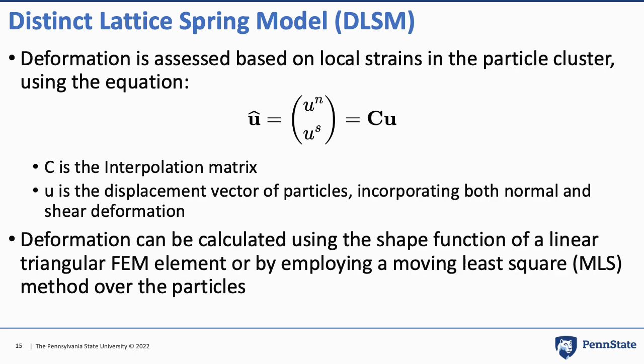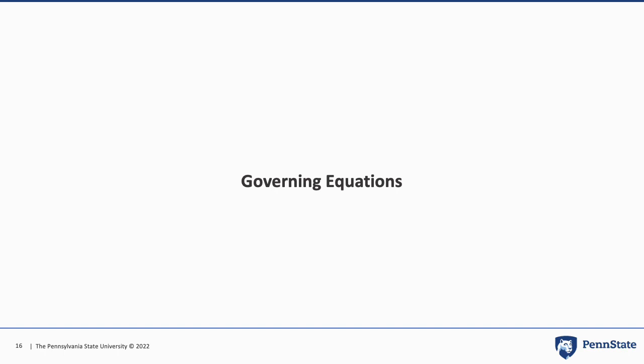Looking at the general principles behind deformation, it is assessed based on local strains in the particular cluster using the shown equation. C is the interpolation matrix and U is the displacement vector of particles, where U to the power of N is normal and U to the power of S is shear. This deformation can be calculated using the shape function of a linear triangular FEM element or by employing a moving least squares (MLS) method over these particles.